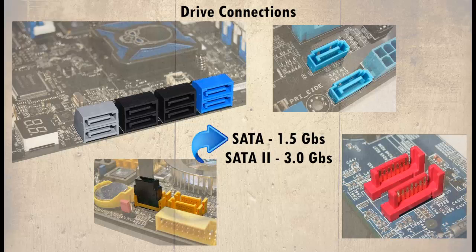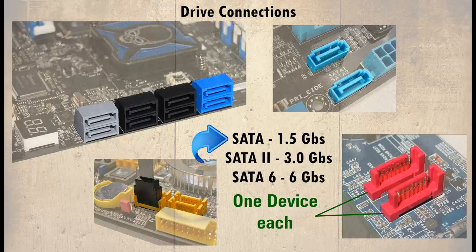The third generation of SATA is now available in high-end systems and is known as SATA 6, which allows data transfer of 6 gigabits per second. Each port can support just one device. You will also find that there is a priority to these ports — as an example, the first port may be labelled as SATA 1 and will have priority over the port labelled as SATA 2, but this priority can be changed.